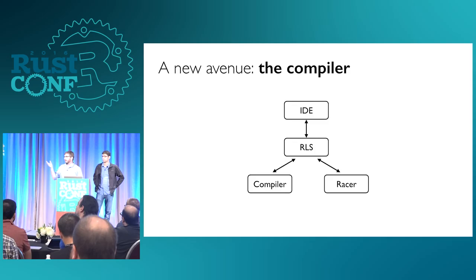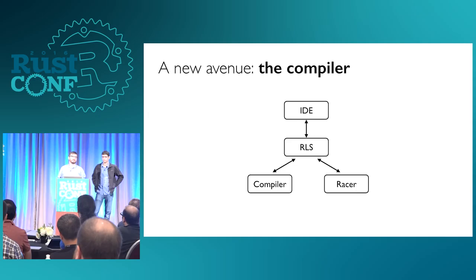Nick and Jonathan have been hard at work in this space. The vision: you have an IDE — maybe VS Code, maybe Atom — talking to a central service called the Rust Language Service, which is in turn talking to some variety of sources. When you need a fast turnaround time maybe you talk to Racer; when you can take a little more time to get something more detailed, you talk to the compiler. They've been making amazing progress on this tool, and now I'm going to shut up and let them show it to you.